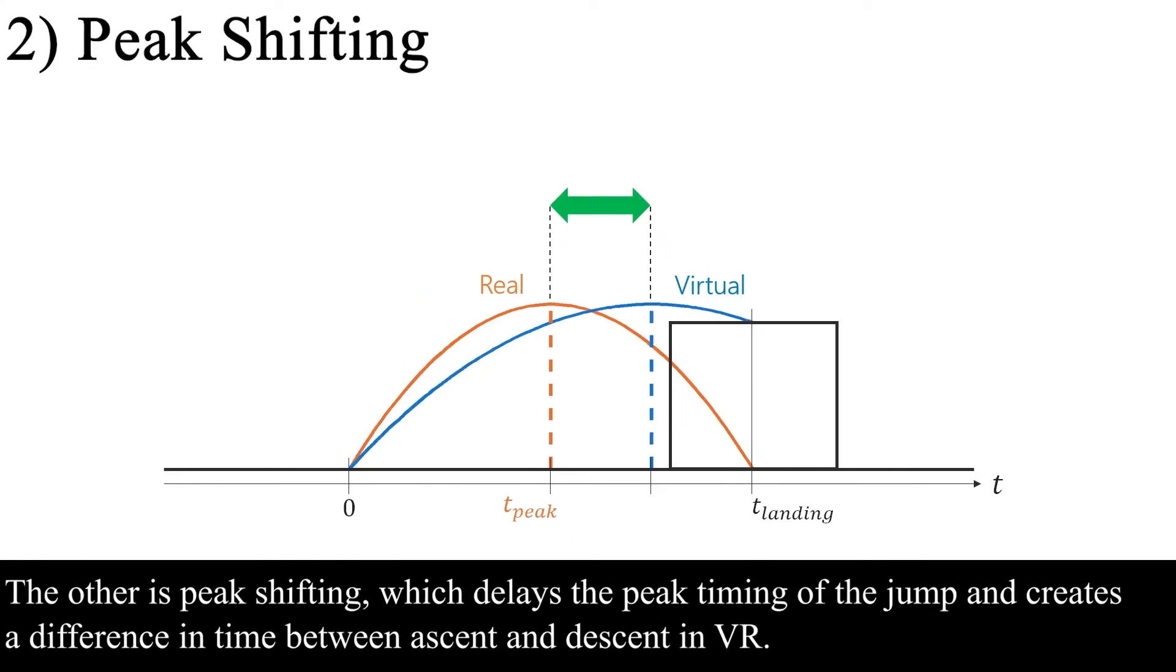The other is peak shifting, which delays the peak timing of the jump and creates a difference in time between ascent and descent in VR.